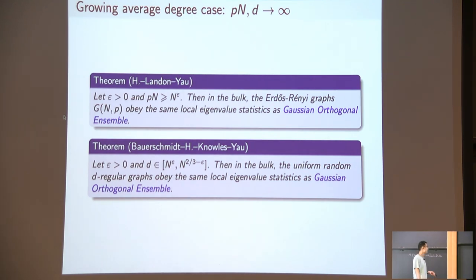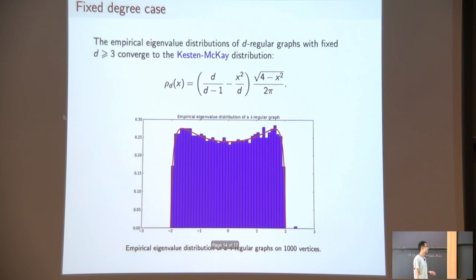The more challenging case is the fixed degree case. For the Erdős-Rényi graph, if the average degree is a constant, the graph is no longer connected. It breaks into many disconnected components, and the spectra contains many atoms, it's pretty nasty, so we restrict ourselves to the d-regular graph case. The d-regular graphs behave much better, at least as long as d is greater or equal than 3, the graph is almost surely connected.